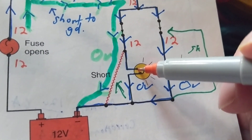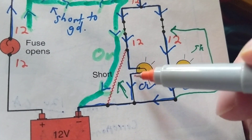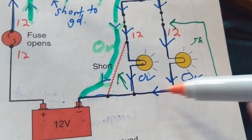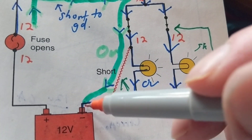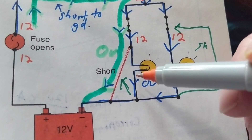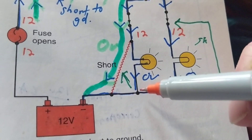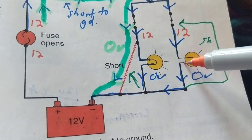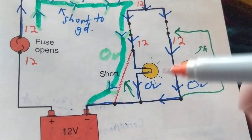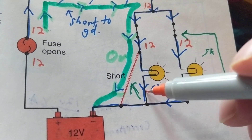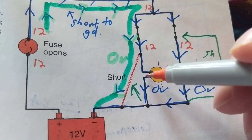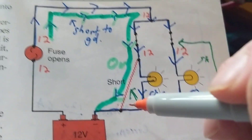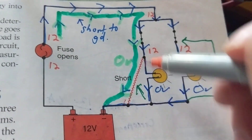Let's say one is the left headlamp and one is the right headlamp — current flows in, comes out, and returns. When the current reaches that point it has to go back to ground, because the path of least resistance is zero ohms. It's not going to go back through the resistance of the bulb. The arrows show current going in and coming out — but now we have a short from here to here.